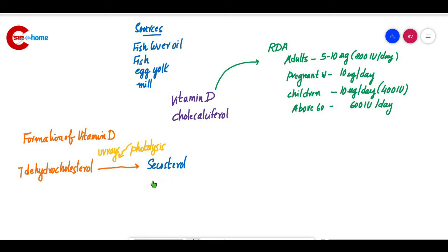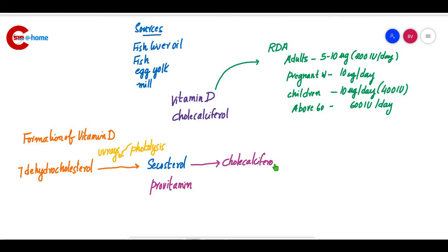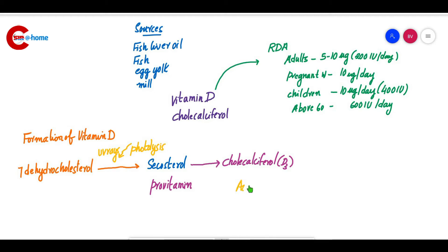Later, this secosterol is isomerized into calciferol, that is Vitamin D3. Because it is formed by the action of sunlight, it is known as the sunshine vitamin. Calciferol, or Vitamin D3, is otherwise known as the sunshine vitamin.